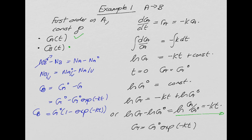Now let's check the solution and see that it has the right behavior. At t = 0, exp(0) = 1, so the term in brackets goes to zero and CB = 0, which is what we said. If t goes to infinity, the exponential term goes to zero and CB = CA0. Since our reaction is one mole going to one mole, that is correct.